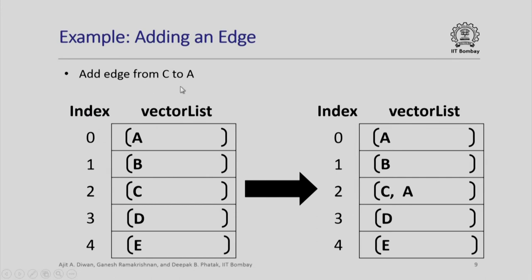Now consider adding an edge — we want to add an edge from C to A. Given our existing vector list where we have created all the nodes, we will go through the vector list and find the starting node: is this C? No. Is this C? No. This is C — yes. Then to this vector list we add A to indicate that there is an edge from C to A. Every time we get an edge we look for the source node as the first element of the vector list and whenever we find it we add the destination node.